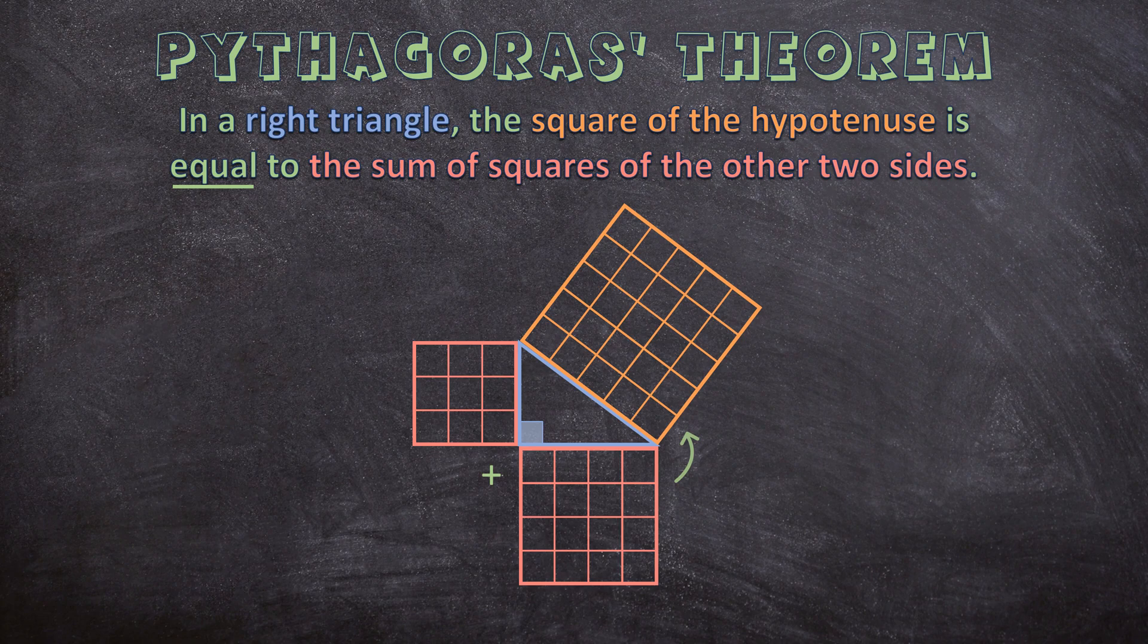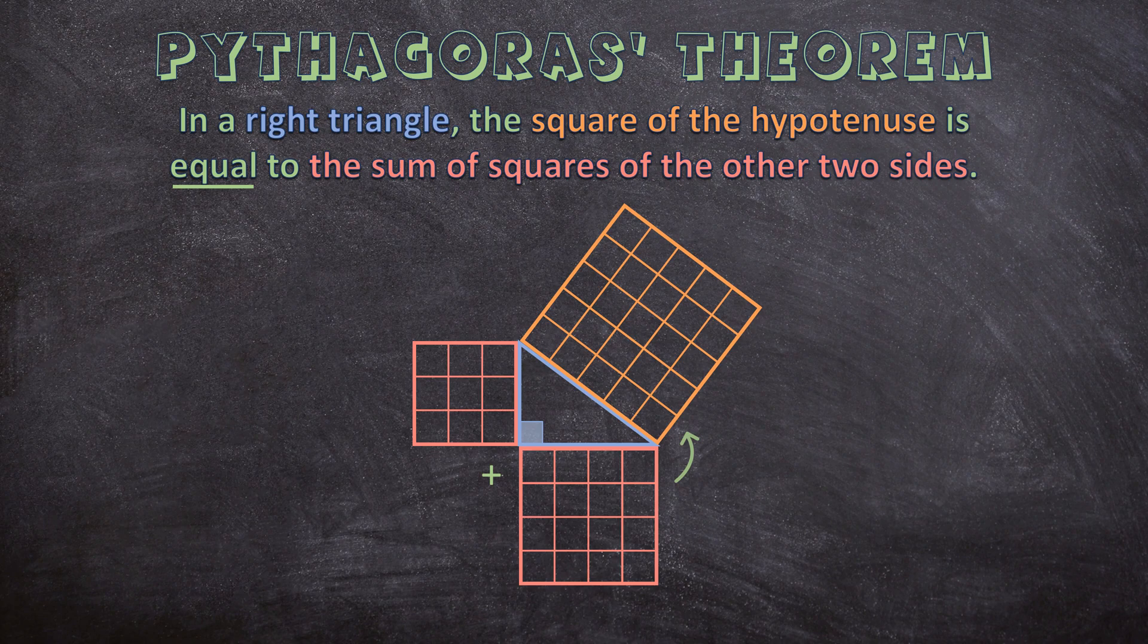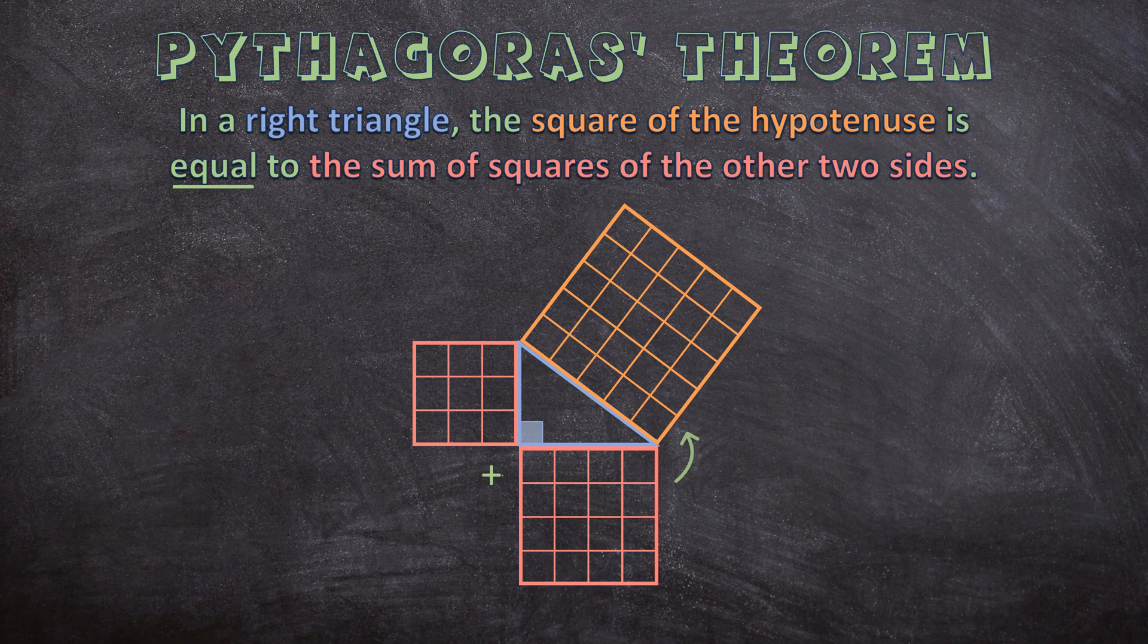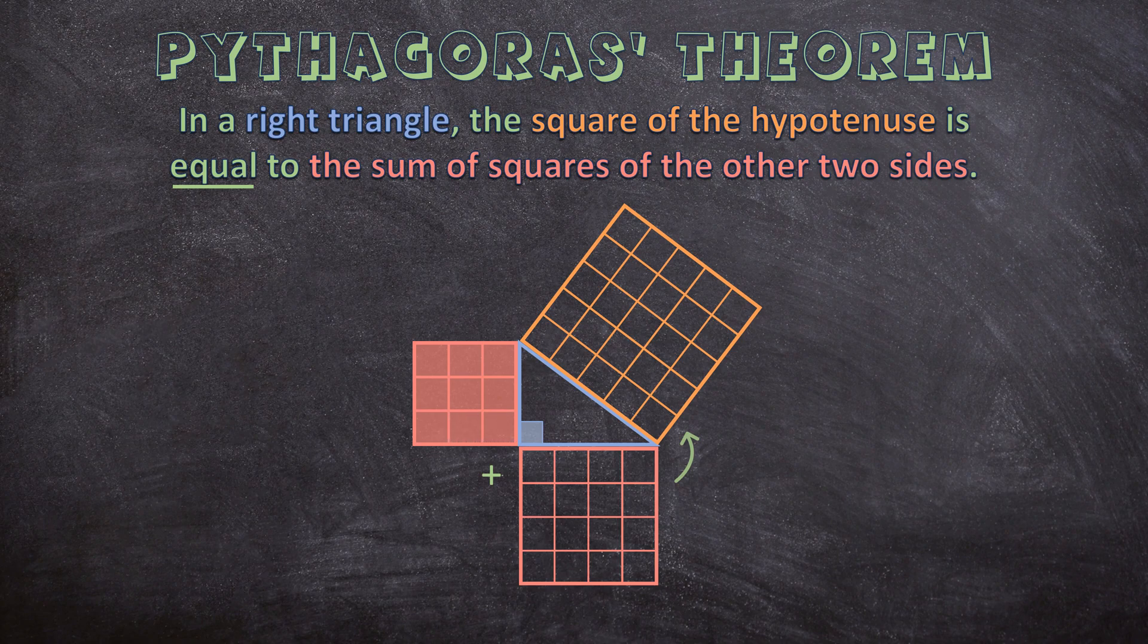So let's test this theorem and let's start with a square that's 3 by 3 centimeters. And we count the square centimeters. So it's 1, 2, 3, 4, 5, 6, 7, 8, 9. So this square is 9 centimeters square.